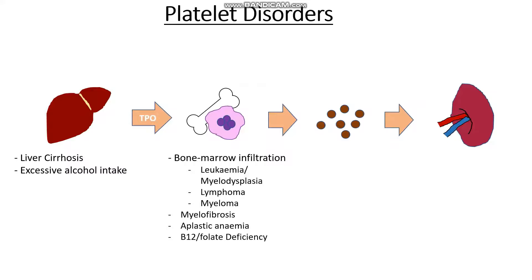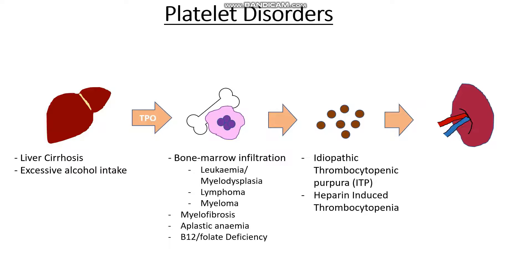The next issue might be with the platelets themselves. For instance, if we had an immune attack or antibodies against our platelets in the case of idiopathic or immune thrombocytopenic purpura (ITP), our platelets tend to get attacked by our own immune system. Another cause is iatrogenic, where a medication causes the patient to develop antibodies — as in heparin-induced thrombocytopenia, where heparin causes the breakdown of platelets.